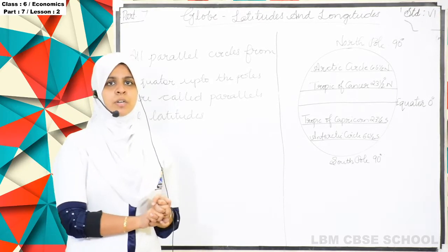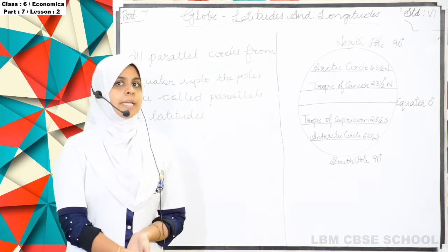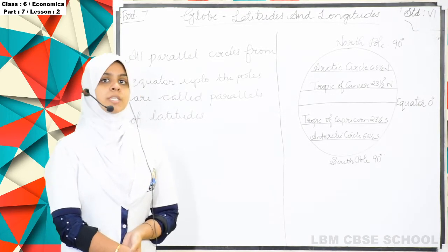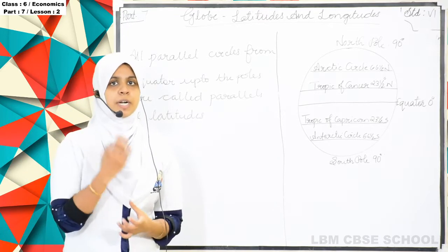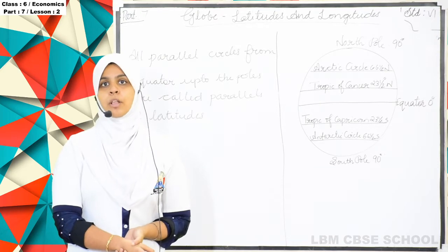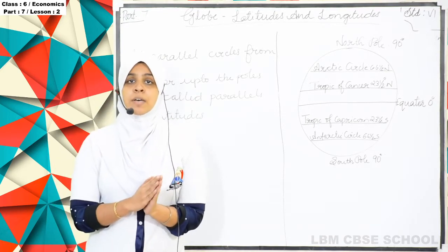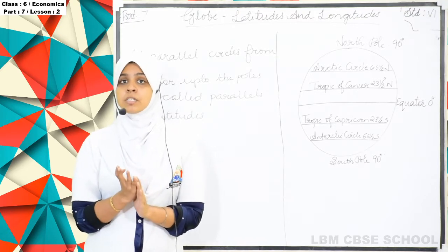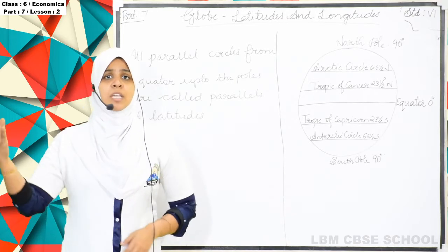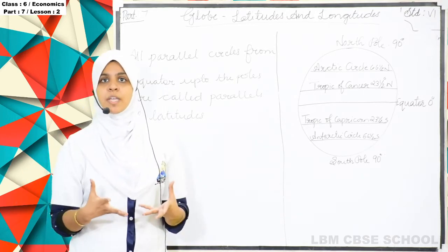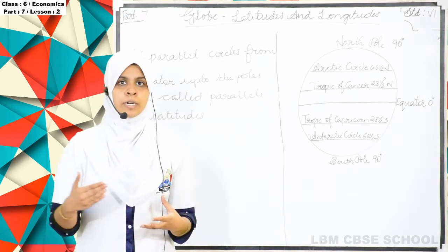In this chapter we will be going into a little more detail about longitude and latitude. First of all, what is a globe? A globe is a true model of the earth. We have also studied the demerits of the globe — we cannot carry it to other places, it is very heavy and not easy to handle.